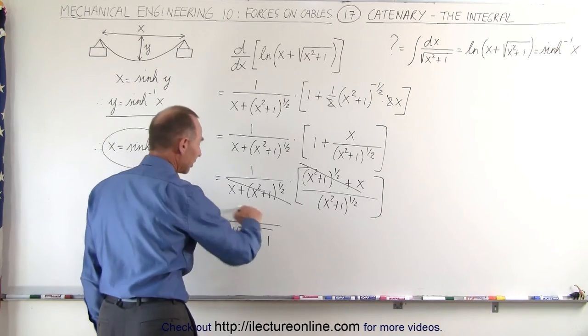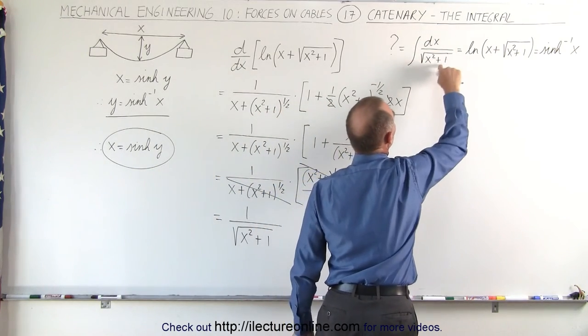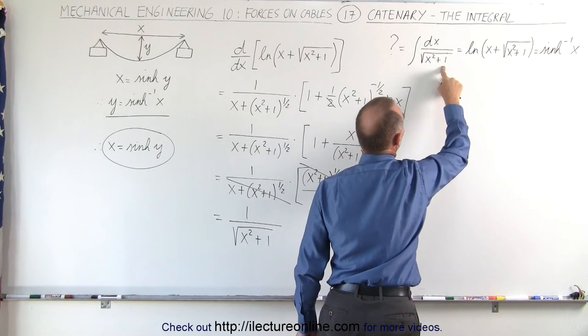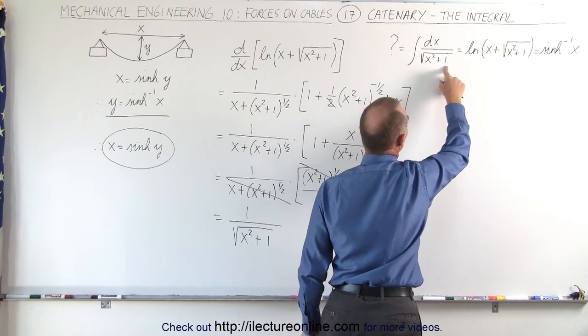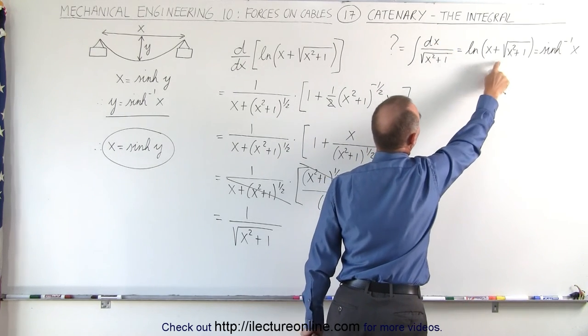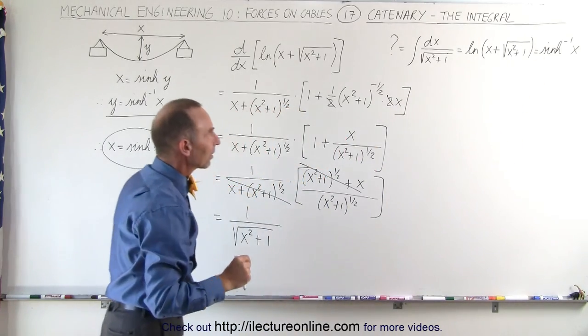And that is exactly, if you look at it, what we have here inside the integral symbol. So 1 over x squared plus 1 times the square root, or the square root of x squared plus 1. If we take the integral of that, of course we need a differential dx, then we get this, which we already know is equal to the inverse hyperbolic sine of x.